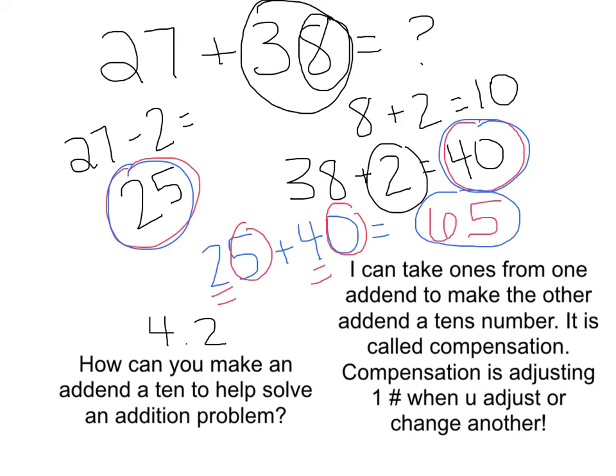So, I can take ones from one addend to make the other addend a tens number. This is called compensation. Compensation is adjusting one number when you adjust or change another number.